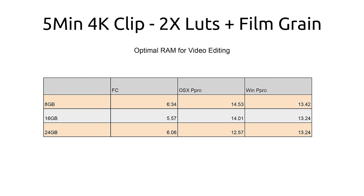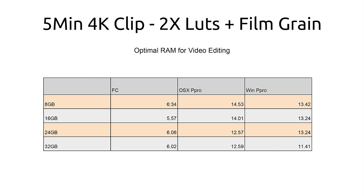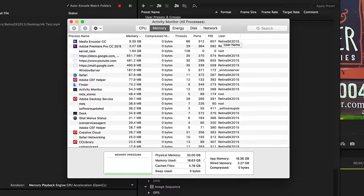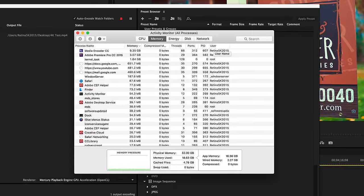At 24 gigabytes, there's no increase in Final Cut — actually slightly slower, but probably within the margin of error. Premiere Pro on OSX shows a good improvement, taking advantage of that extra RAM. On the Windows side, we're not seeing any difference. So if you're running Premiere Pro on OSX, you get some extra speed with 24 gigs. Looking at 32 gigabytes, there's no real difference in Final Cut or Premiere Pro on OSX. But Premiere Pro on Windows does see an improvement — Windows really likes that extra RAM, giving the program more space, and it actually uses up to 18 gigabytes when 32 is available. Premiere Pro is very happy there.